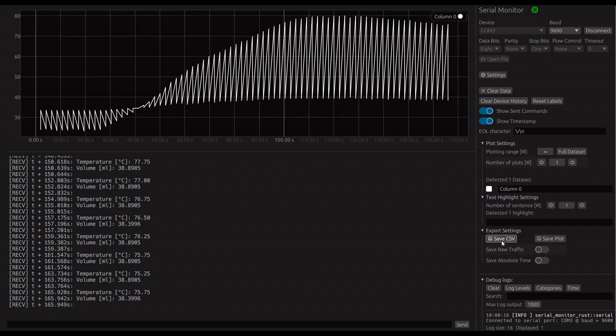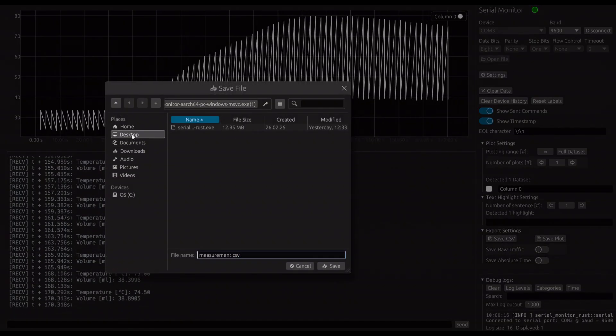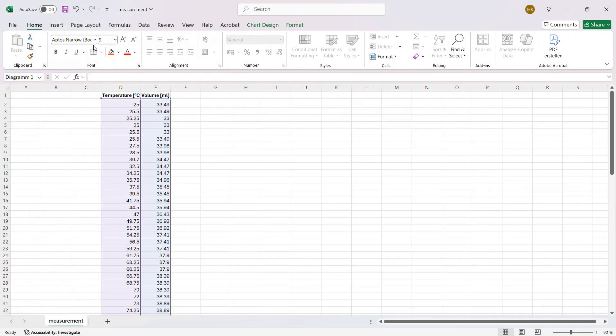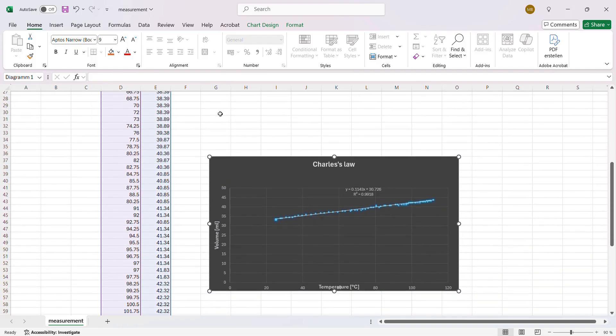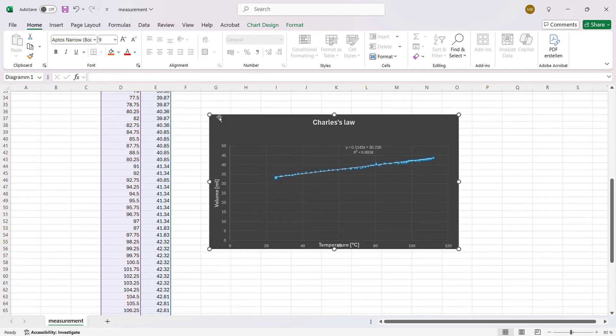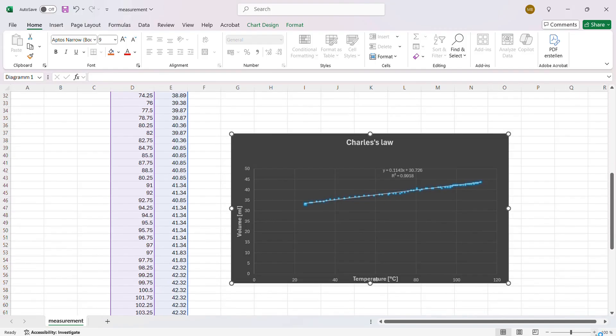After the experiment, the data is saved in a CSV sheet as already mentioned. Now the CSV sheet is opened in Excel. The data is separated and a scatter plot is created. The temperature is plotted on the x-axis and the volume on the y-axis. With the trendline tool linear is selected, which is linear regression. Then the formula and the square of the correlation are displayed.